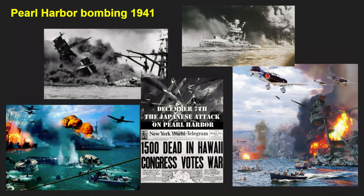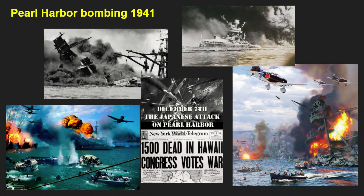The surprise attack struck a critical blow against the United States Pacific Fleet and drew the United States into World War II. With diplomatic negotiations with Japan breaking down, the United States knew that an imminent Japanese attack was probable, but nothing had been done to increase security at the important naval base at Pearl Harbor. Most of the Pacific Fleet was rendered useless. Five of eight battleships, three destroyers, and seven other ships were sunk or severely damaged, and more than 200 aircraft were destroyed. A total of 2,400 Americans were killed and 1,200 were wounded, many while violently attempting to repulse the attack.